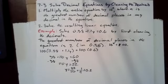The process here is to first multiply the entire equation by 10 to the n, where n is the greatest number of decimal places in any decimal in the equation. Then solve the resulting linear equation.